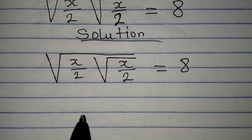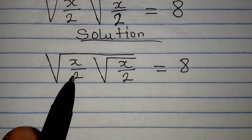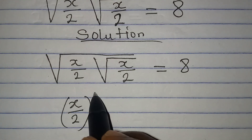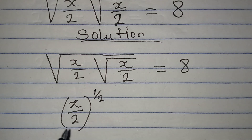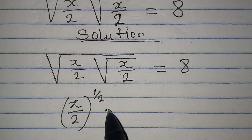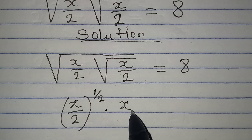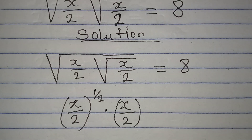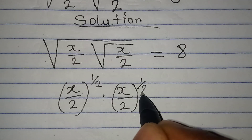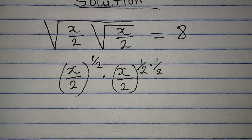I want to break this down. Remember, x over 2 is under the bigger square root. So I'm going to have square root of x over 2, which is x over 2 raised to the power of 1 over 2. This is the same thing as the square root of x over 2, and I am multiplying this by x over 2 again — that second x over 2 is also under a square root sign.